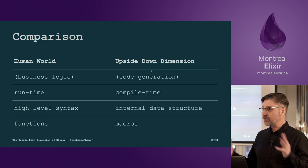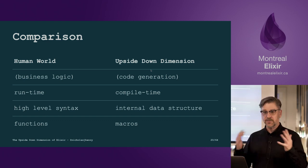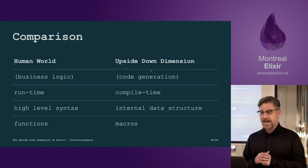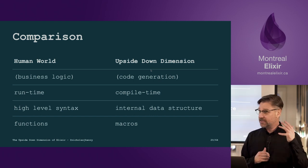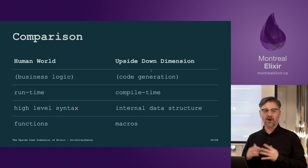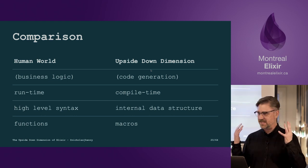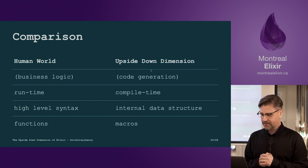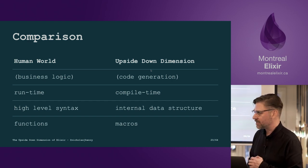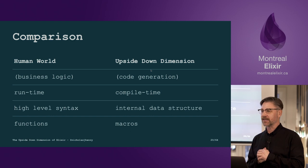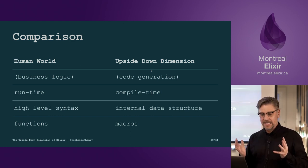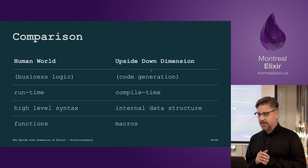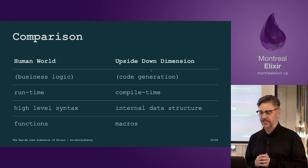I like to think about these as two worlds. We have our human world, where we write our business logic and it gets executed at runtime — we write in the high-level Elixir syntax and we write functions. But in the upside-down dimension of metaprogramming, we're generating code that gets executed at compile time. Rather than this high-level syntax, we have an internal data structure, and instead of writing functions, we write macros.